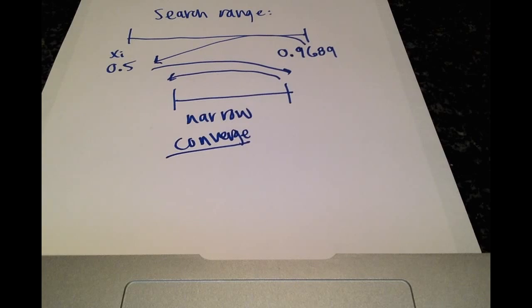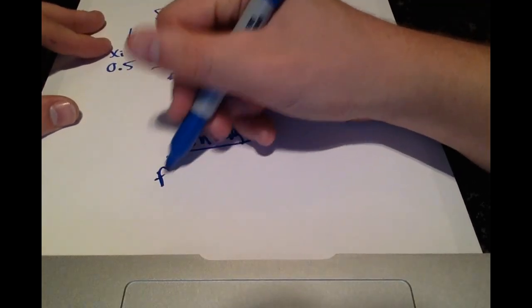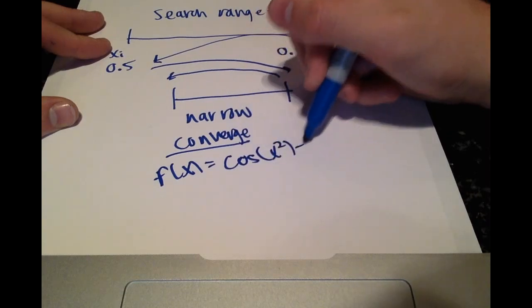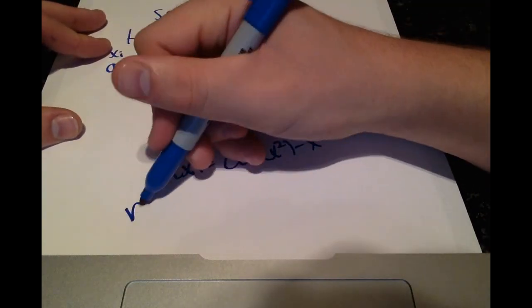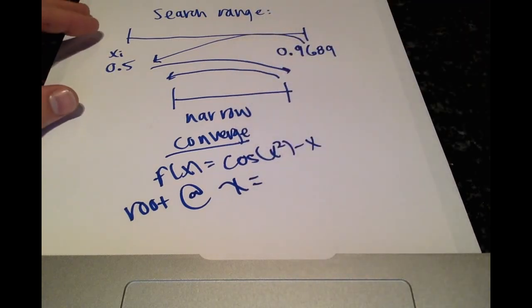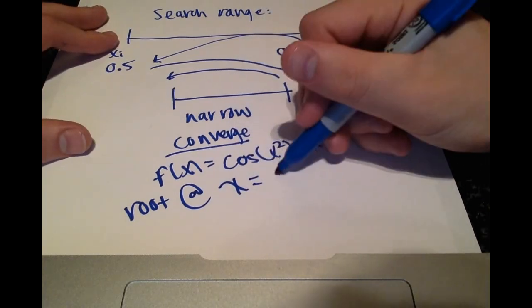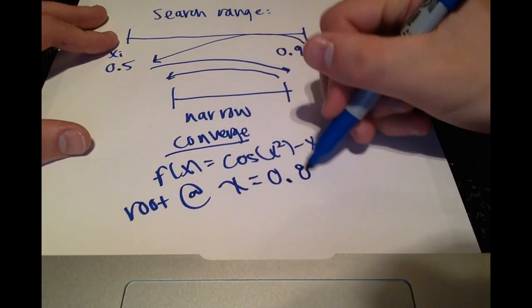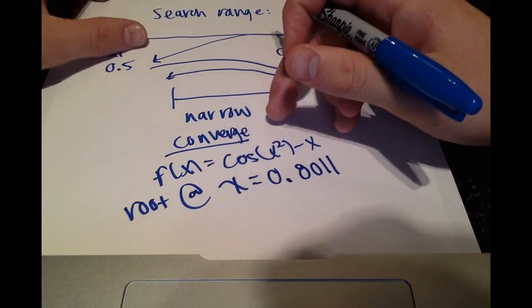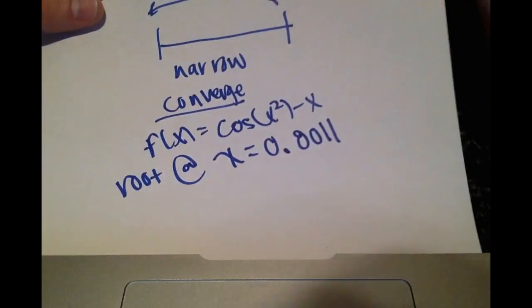And just for reference for this function, f of x equals cosine of x squared minus x, there is a root at x equals 0.8011. So just for reference, we were slowly but surely closing in on this root.